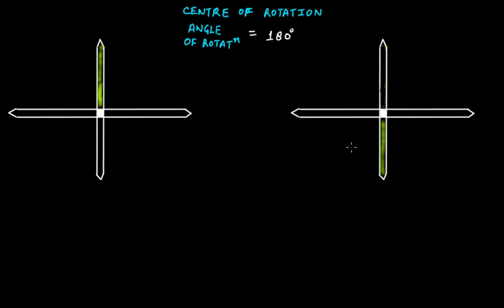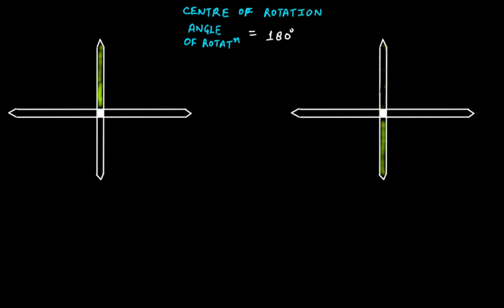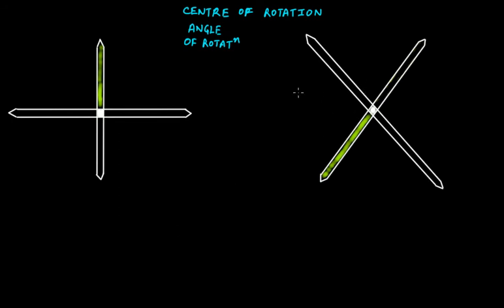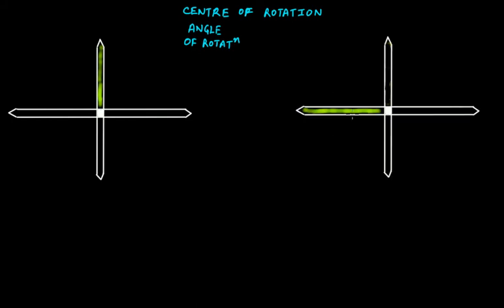We again rotate this with 45 degrees, so the total rotation will be 225 degrees. At the previous position we had 180 degrees, and rotating a further 45 degrees gives 225 degrees. At 225 degrees this is not exactly the same as the original, so this is not rotational symmetry. We rotate again by 45 degrees, making the total 270 degrees. At the angle of rotation of 270 degrees, these two figures are again showing rotational symmetry.